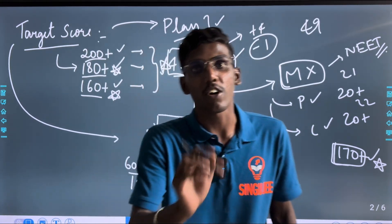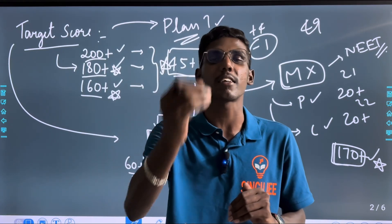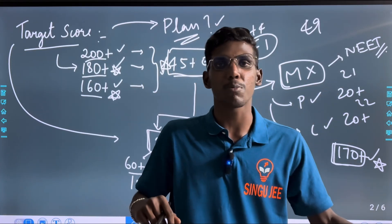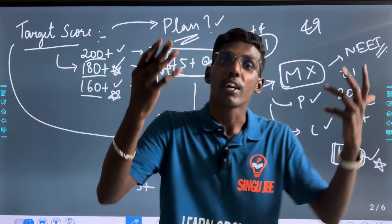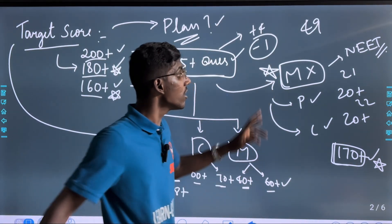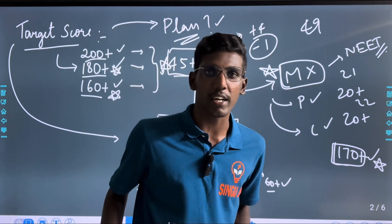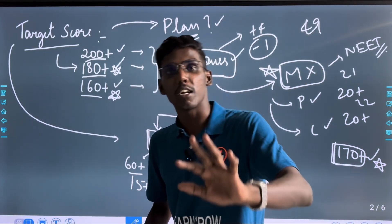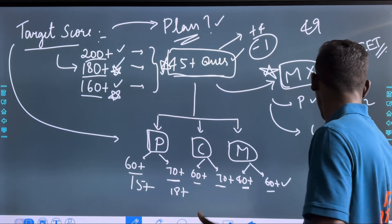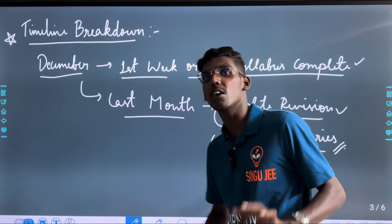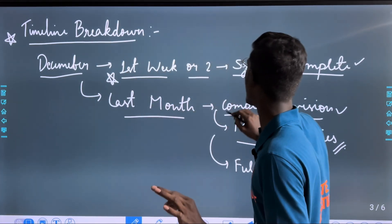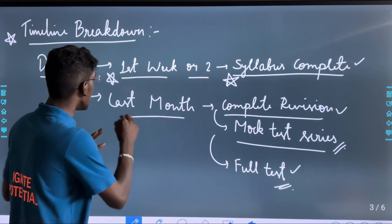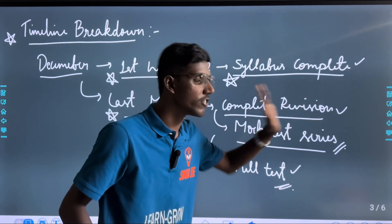If you are studying for an engineering course, max score alone is not enough — max is a general logic. For the timeline breakdown: the first step is to finish the syllabus. You can complete revision in a complete month — complete it in the first or second week. This is a useful approach.